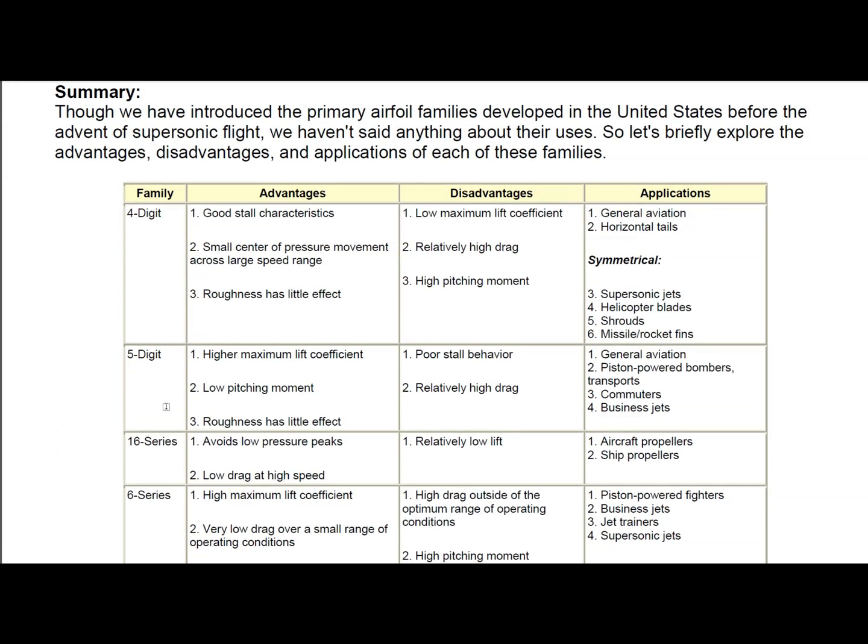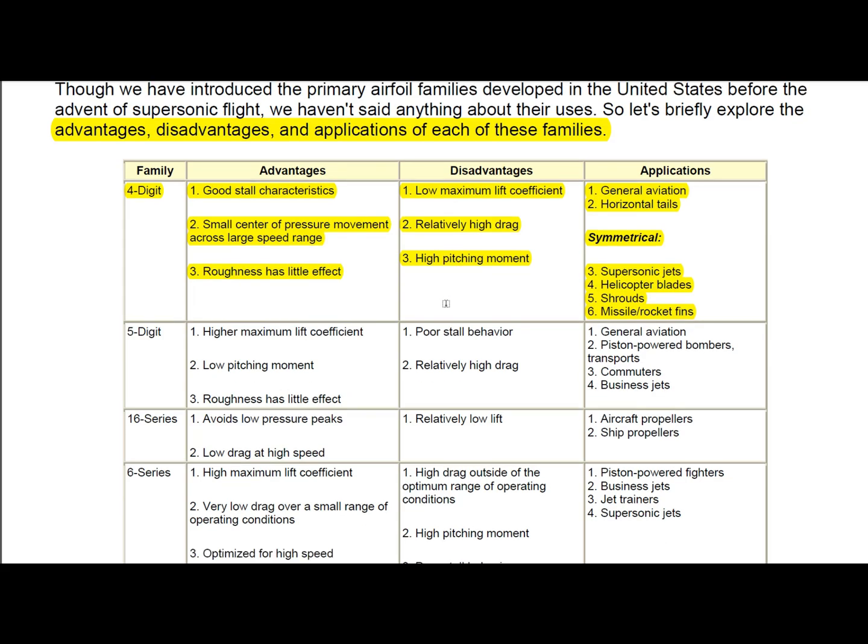Here comes the advantages, disadvantages, and their applications. NACA four digit airfoil series has good stall characteristics, small center of pressure movement across large speed range, and have little roughness effect. But the main disadvantage is that it has low maximum lift coefficient and has relatively high drag and high pitching moment.